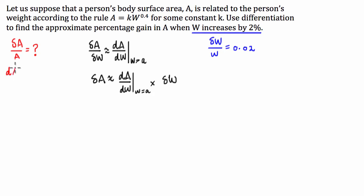So what we're going to do now is we're going to look at this function and differentiate it so we can get this dA/dW. So dA/dW, I'm assuming you guys know how differentiation works, is 0.4k times W to the negative 0.6. So that's our derivative.